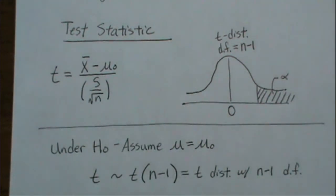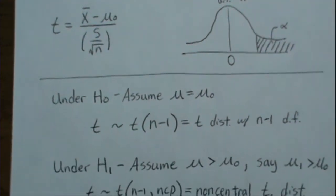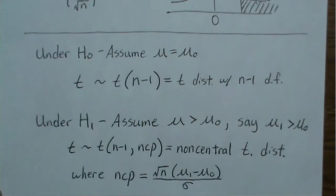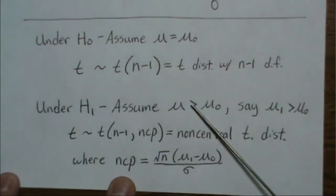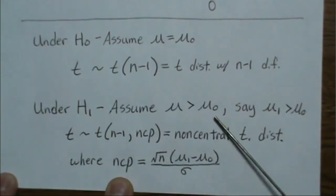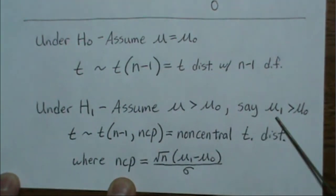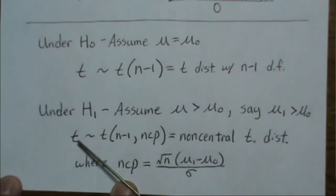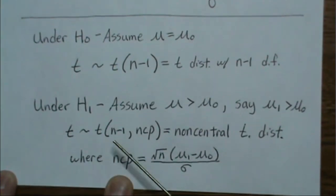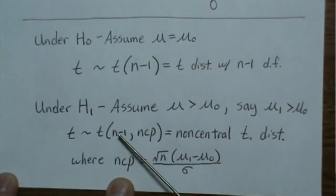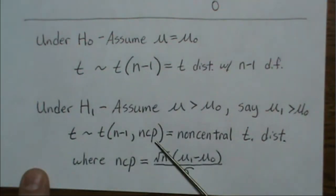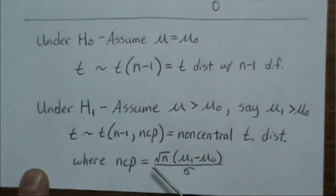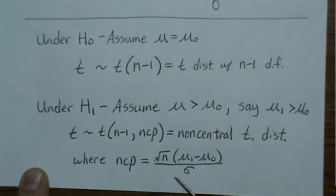But when we calculate power or sample size, we have to assume that the alternative is true. Assuming the alternative is true means we pick some value greater than μ₀, say μ₁. So μ₁ is in the alternative region greater than μ₀. Then the test statistic follows a non-central t-distribution with n-1 degrees of freedom and non-centrality parameter (ncp) equal to this value.